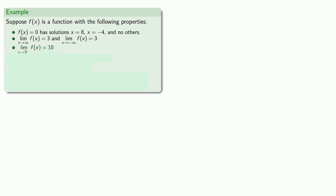The limit as x approaches 3 from below of f of x is equal to 10. The limit as x approaches 5 from above of f of x is minus infinity, and the limit as x approaches 5 from below of f of x is positive infinity. And f of x is continuous as long as x is not equal to 5.